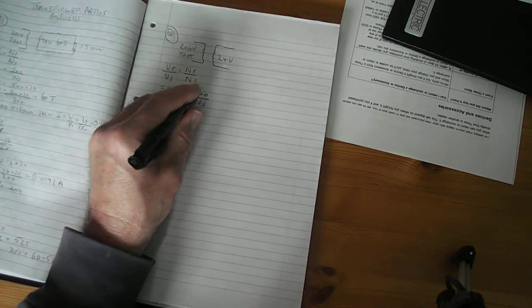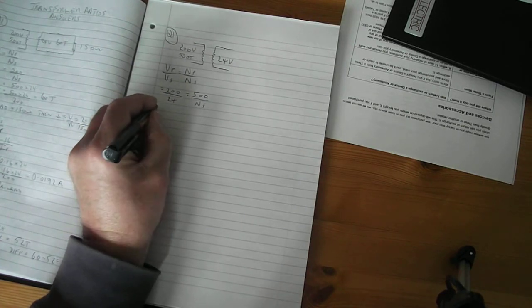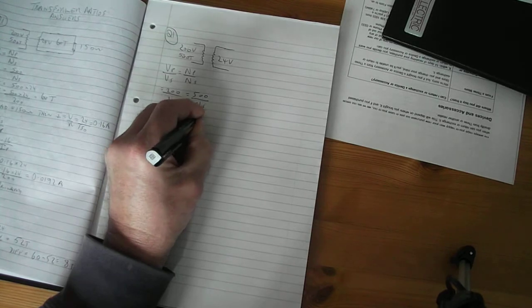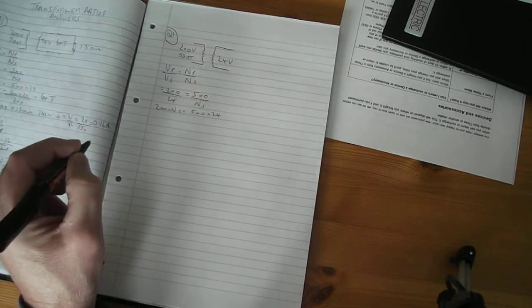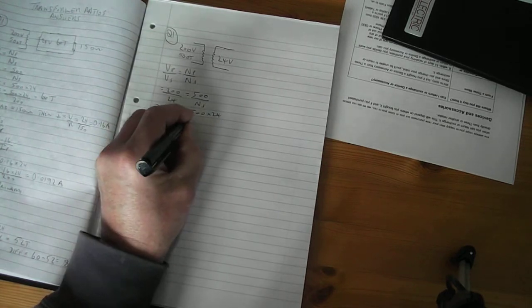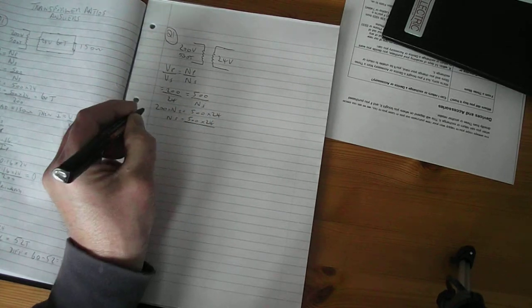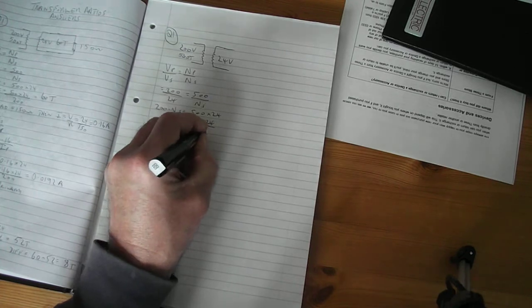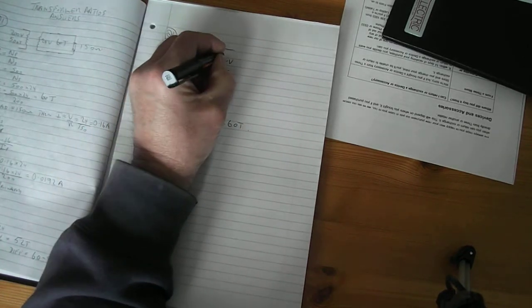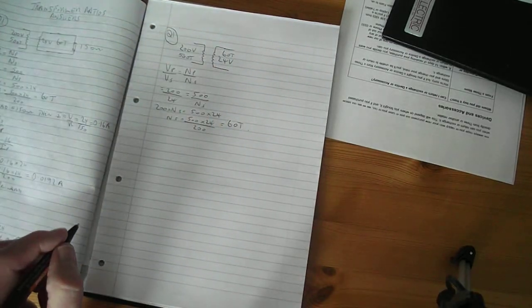Cross multiply to get rid of the fractions, so 200 times NS equals 500 times 24. Therefore NS equals 500 times 24 divided by 200, and that comes to 60 turns. So now you've got 60 turns on the secondary, which you can put there.